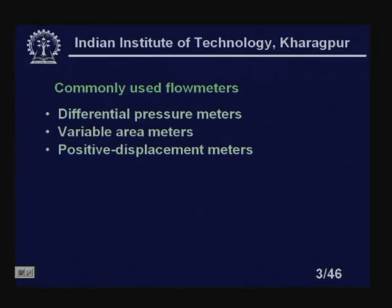We have positive displacement meters, which measure not the flow velocity but the quantity — the amount of liquid flowing in a particular situation. A common example is the petrol pump at a gas station. When you take petrol or diesel, you are not interested in the flow rate but the total quantity of liquid. That is when we need a positive displacement meter.